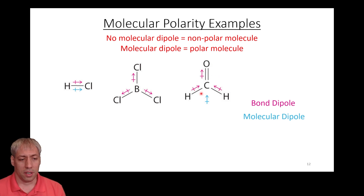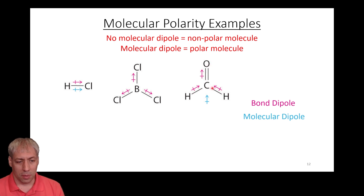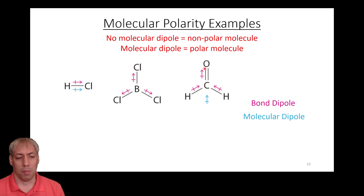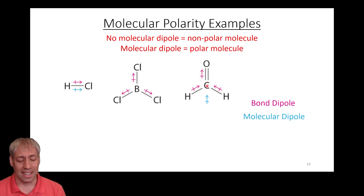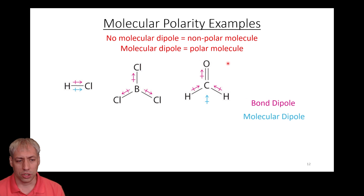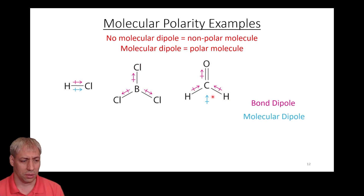Another trigonal planar example: formaldehyde with H, C, H, and an O on top. Carbon is more electronegative than hydrogen, so we have bond dipoles there. Oxygen is much more electronegative than carbon, giving a dipole moment in that direction. Unlike BCl₃ where all three arrows cancel, here the arrows add together — they're pulling in one direction much more than any other. Each bond dipole adds together to give a molecular dipole, making this a polar molecule with partial negative on the oxygen side and partial positive on the hydrogen side.